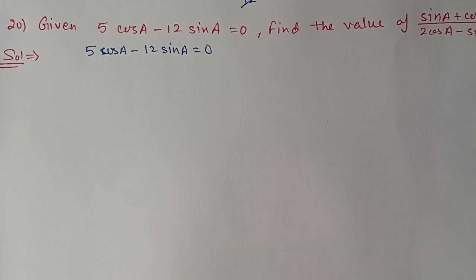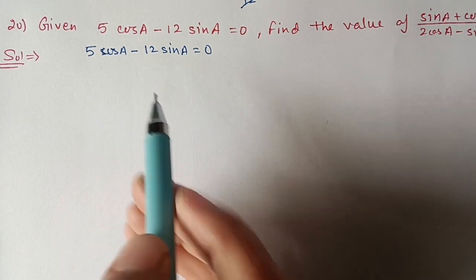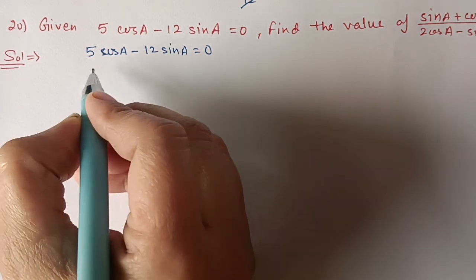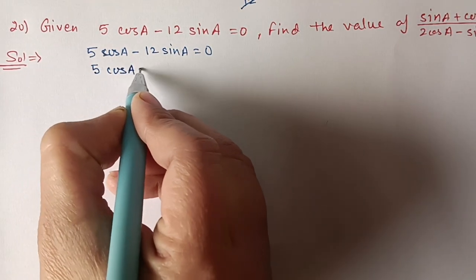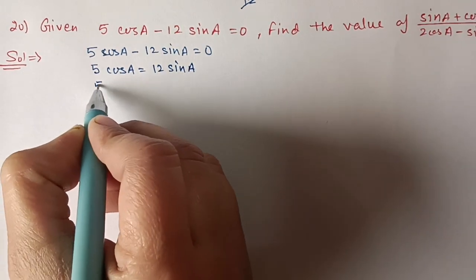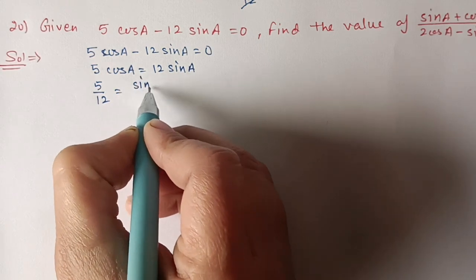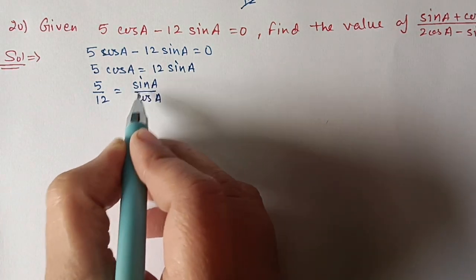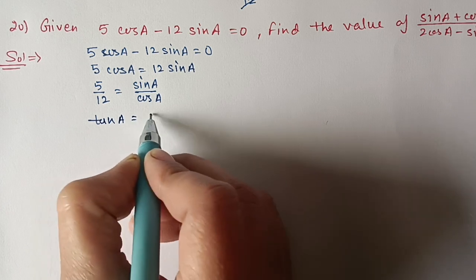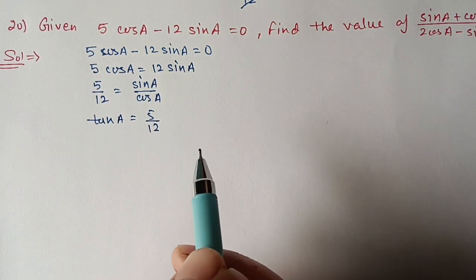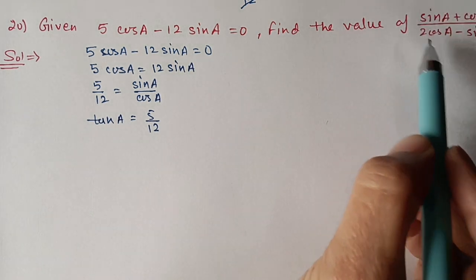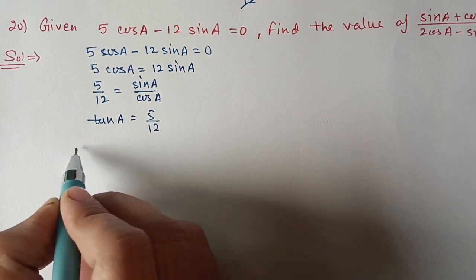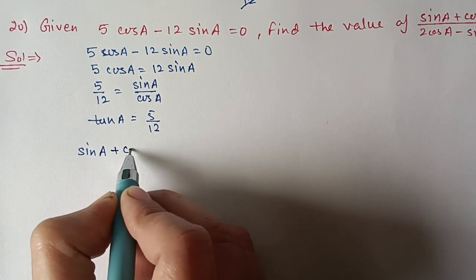Question number 20. Given 5cosA - 12sinA = 0, find the value of (sinA + cosA) / (2cosA - sinA). From 5cosA = 12sinA, we get sinA/cosA = 5/12, so tanA = 5/12. We will change sinA and cosA into tanA by dividing numerator and denominator by cosA, giving (tanA + 1) / (2 - tanA).